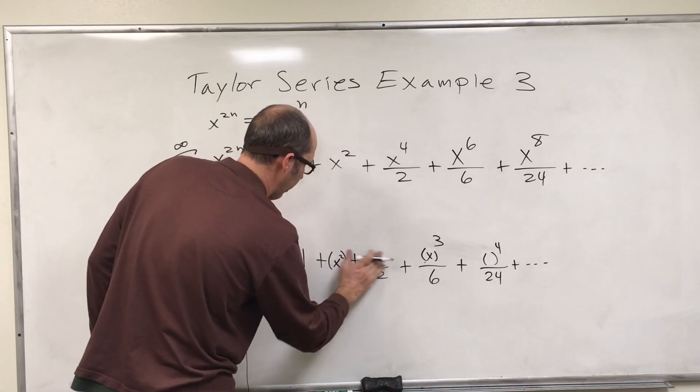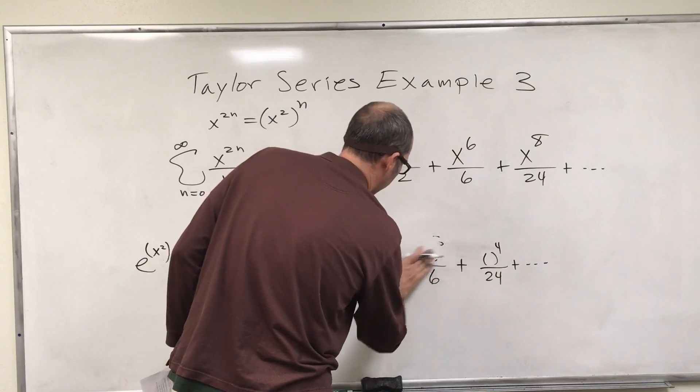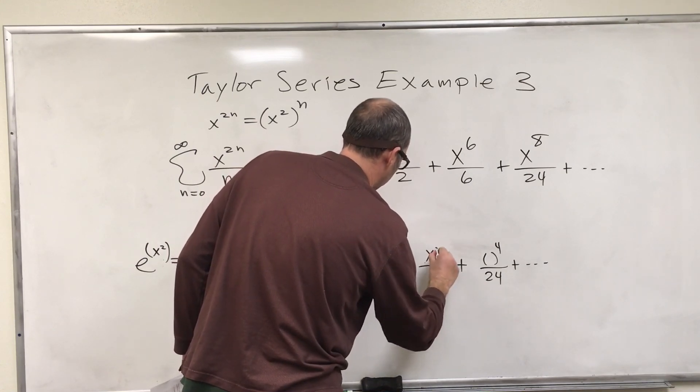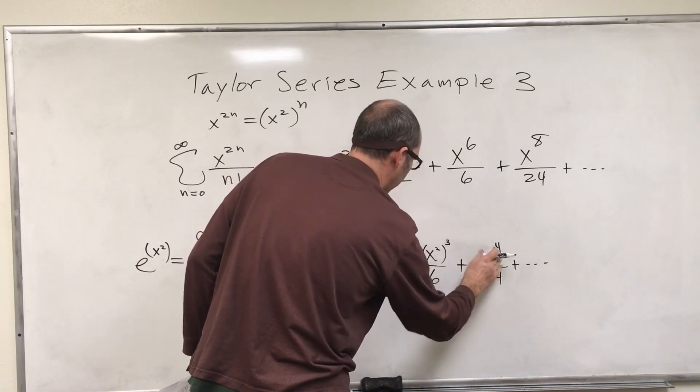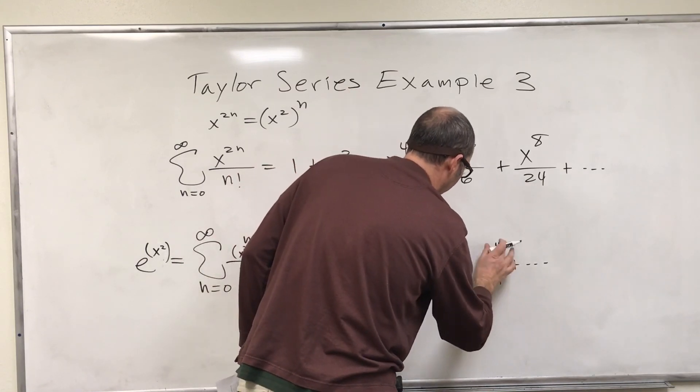Let me write this better here. We've got x squared squared. Here, x squared cubed. Here, x squared to the fourth.